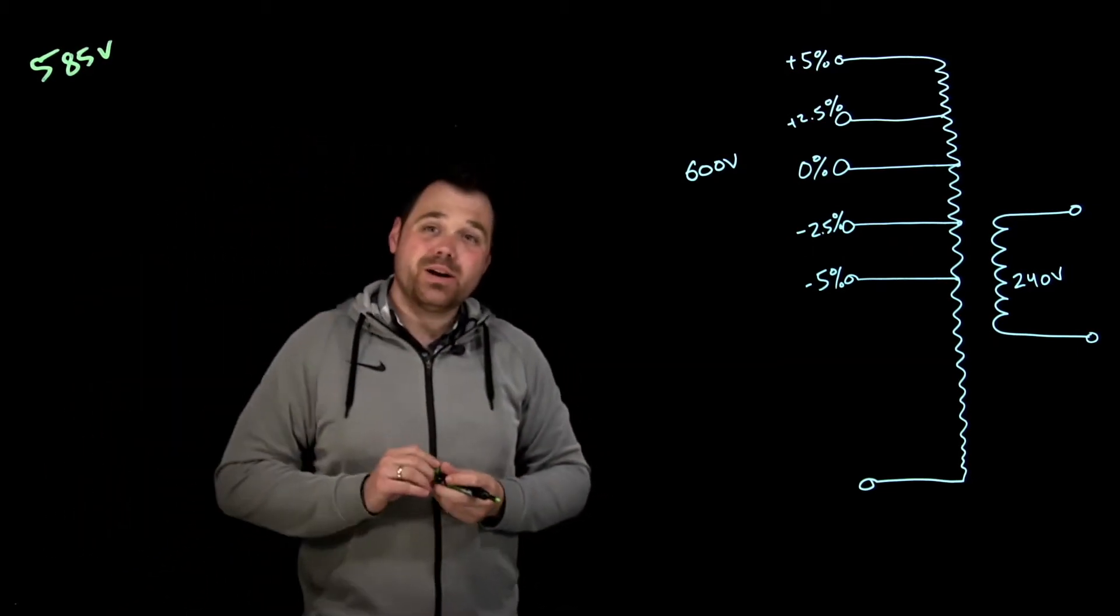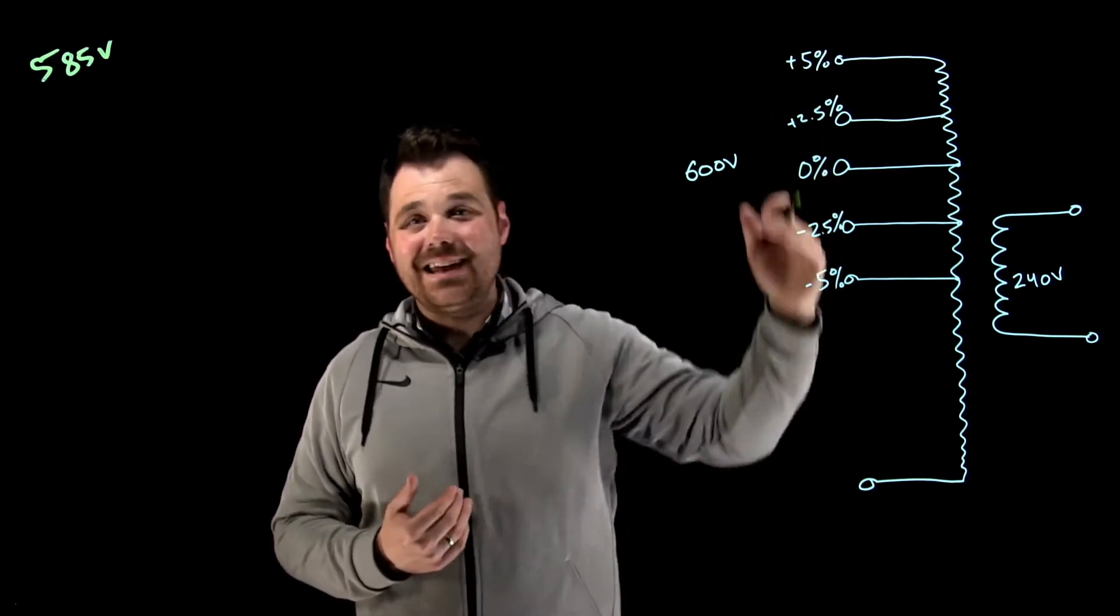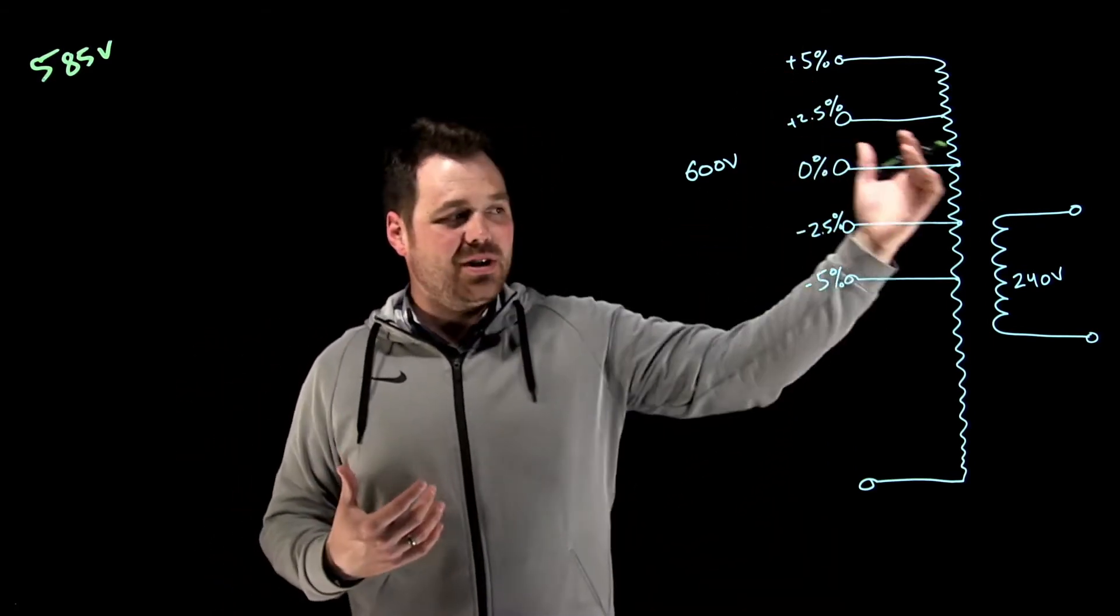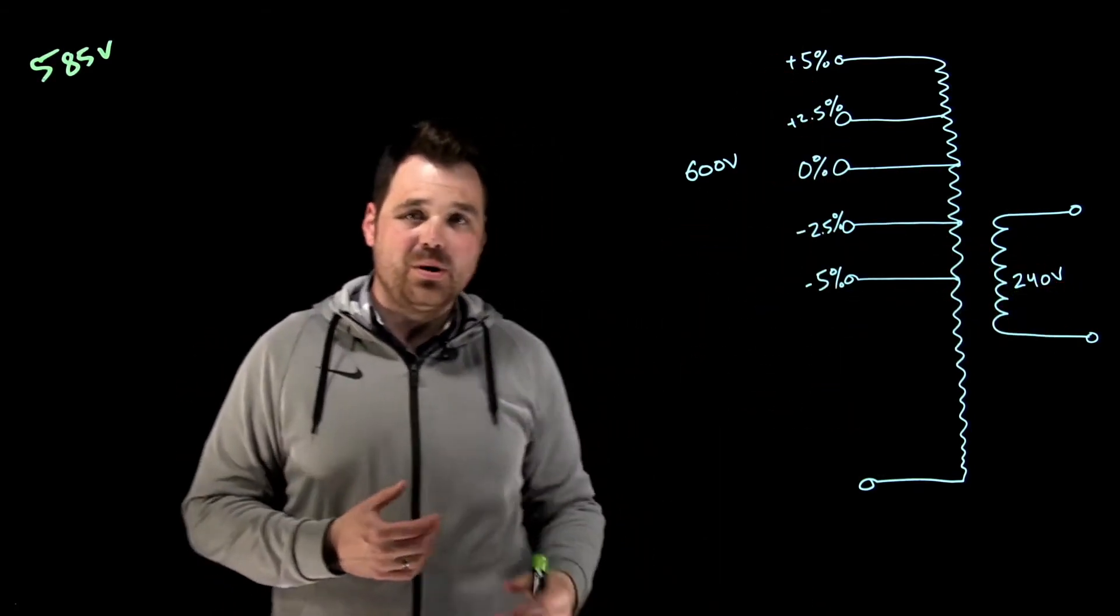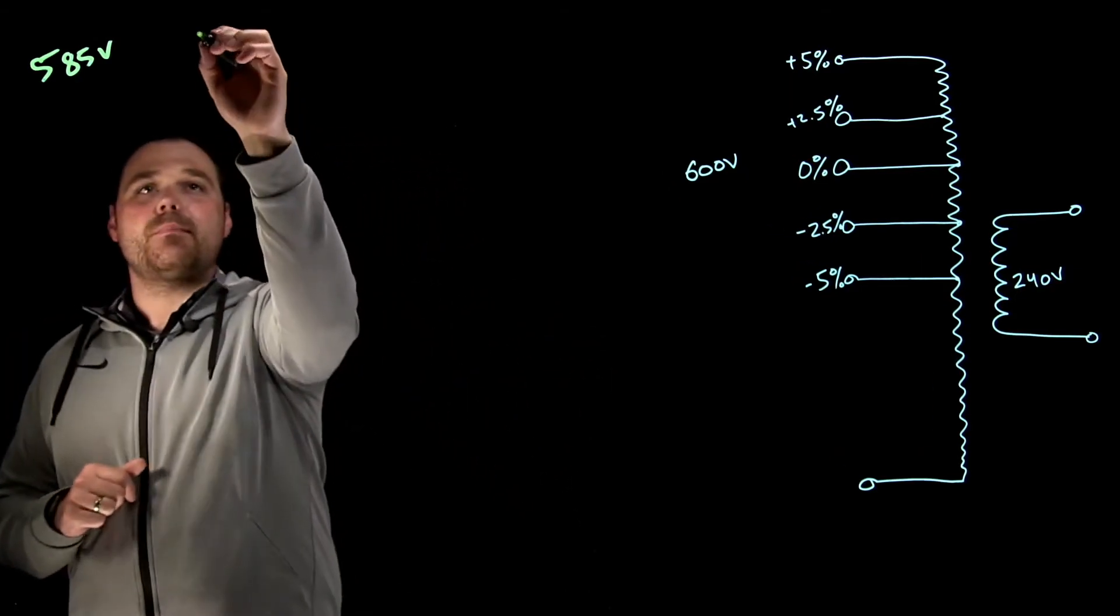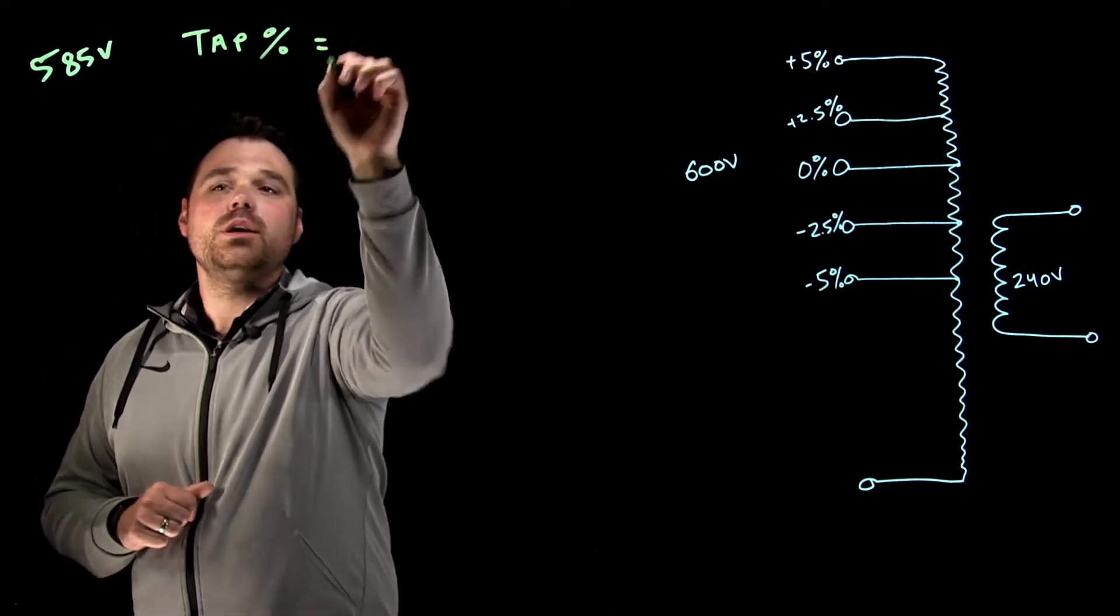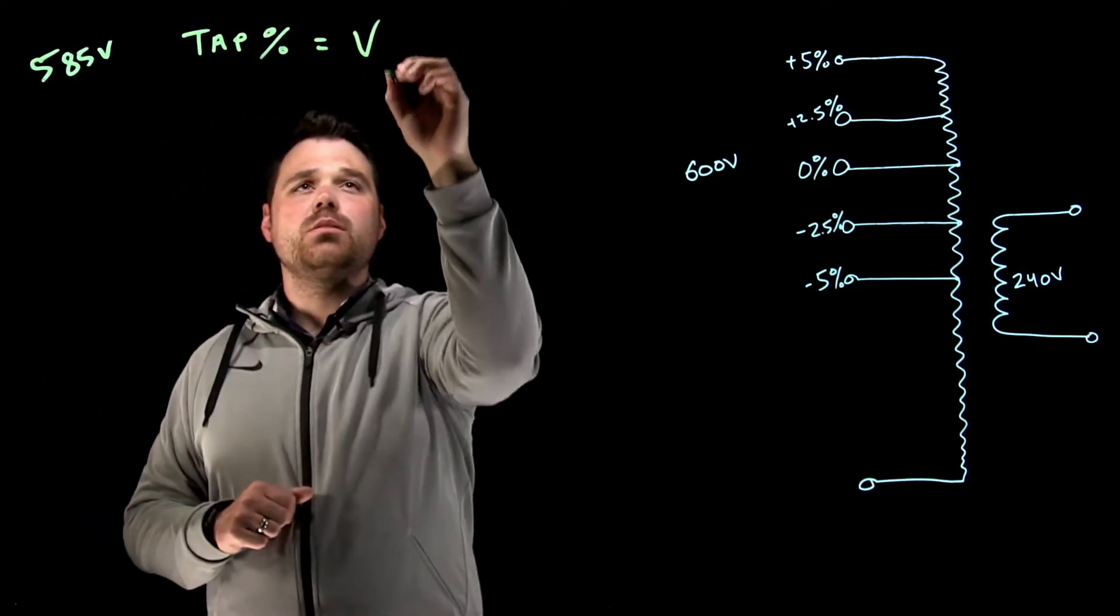So what we want to do is we want to calculate what tap setting am I going to use in order to get my rated 240 volt output. There's one formula we're going to use for this. It is the tap percentage equals the actual voltage minus the rated voltage divided by the rated voltage.